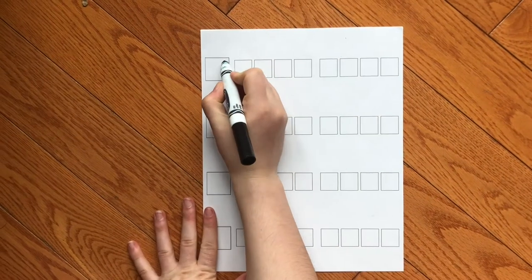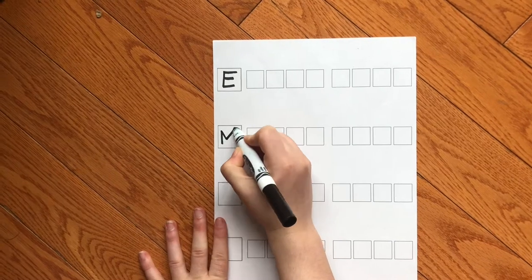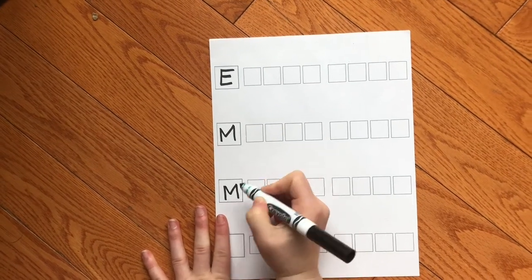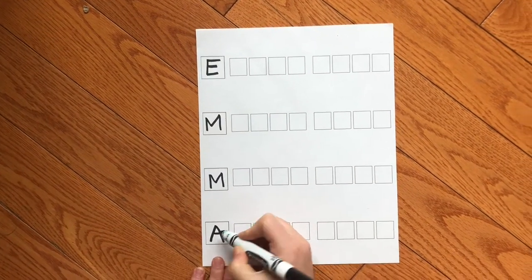First, have your student write their name or another word that you would like to spell out in the slightly larger boxes along the left side of the blank template. I chose to use my name, Emma.